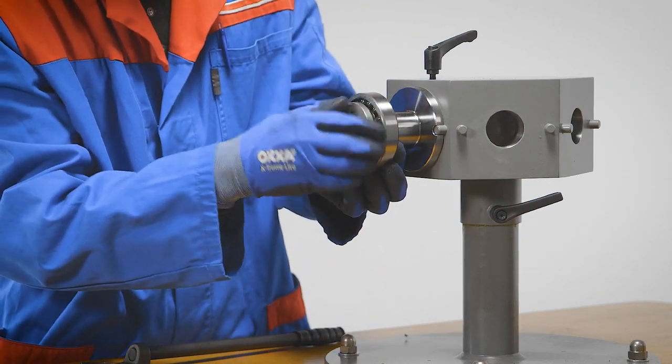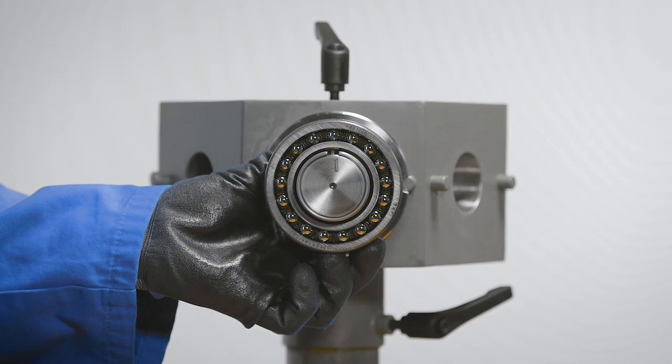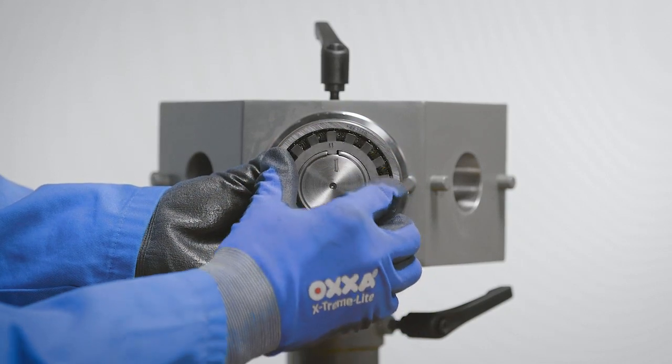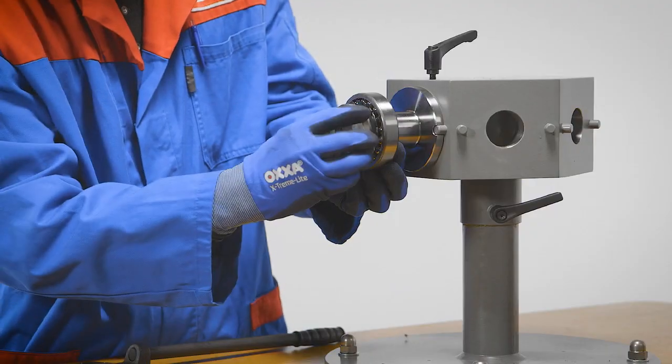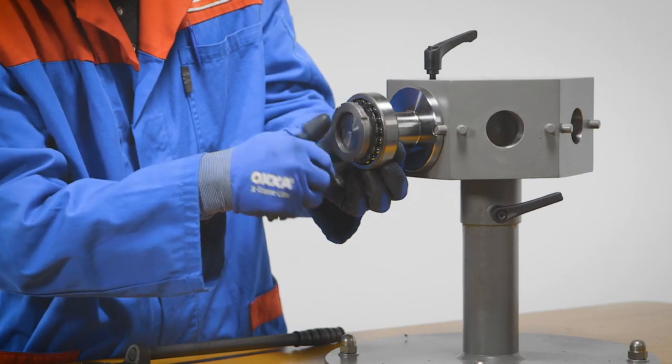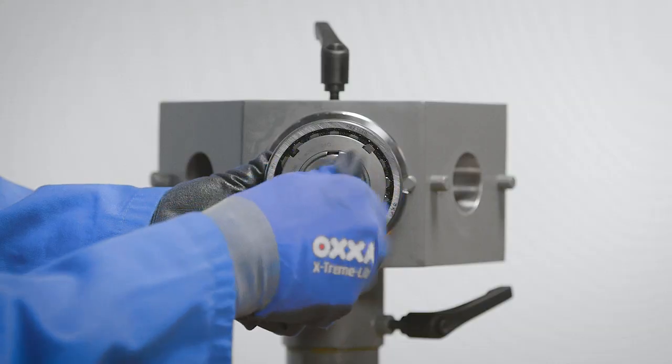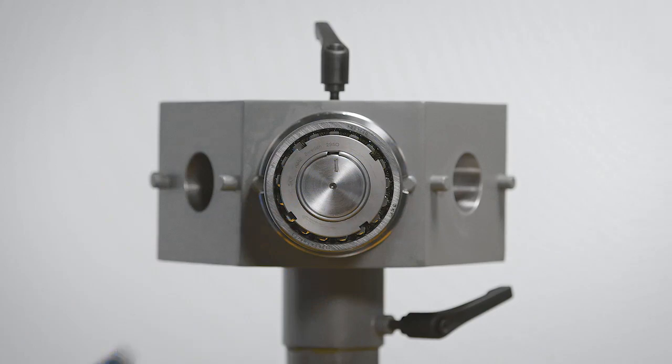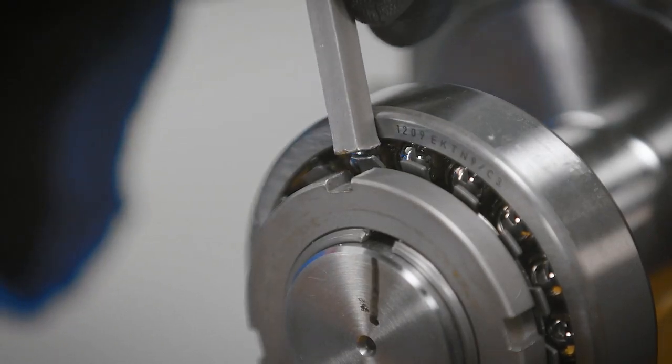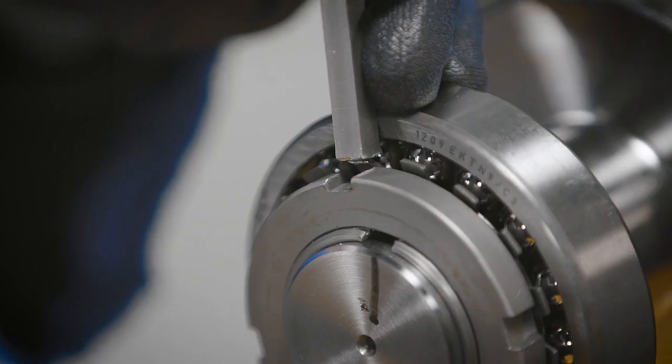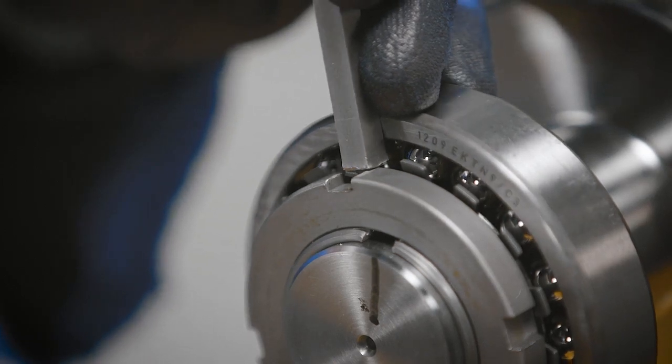Remove the lock nut and place the lock washer by securing the nut back on the sleeve. Finally, bend one of the lock washer tabs into a matching slot in the nut. The correct mounting procedure for self-aligning ball bearings with tapered bore is completed.